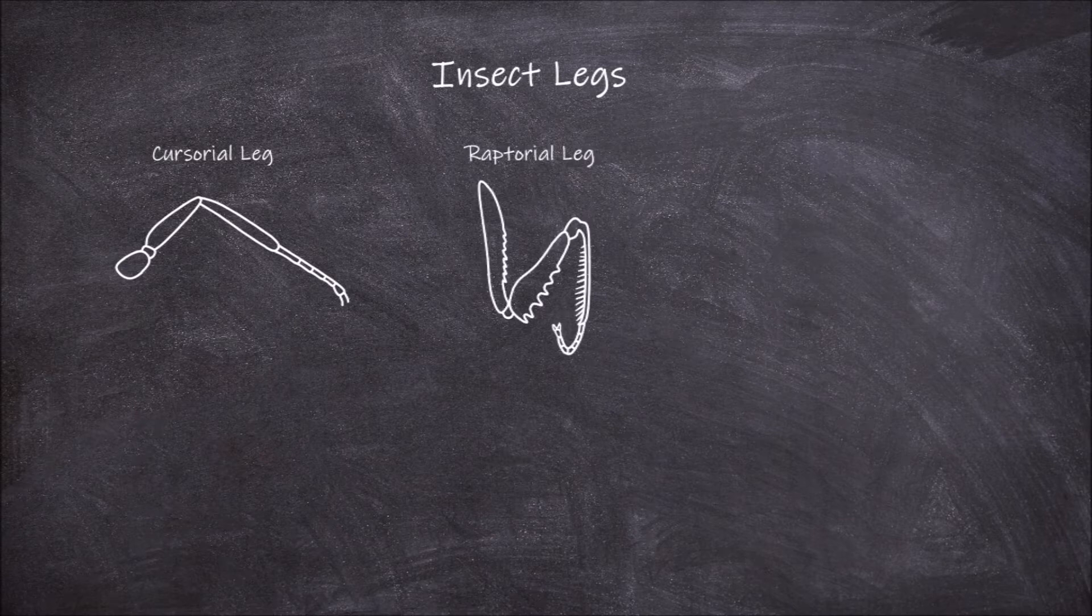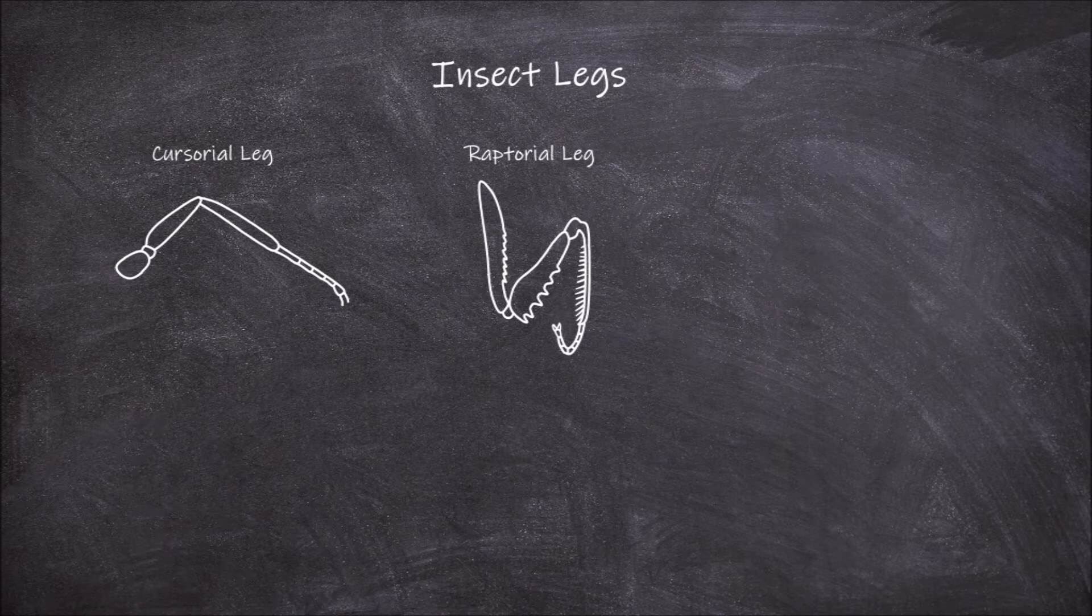The second type of leg is the raptorial leg. These legs are forelegs that are modified for grasping and catching prey and can be observed in the forelegs of praying mantises.